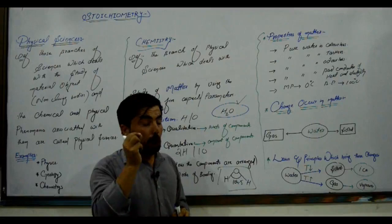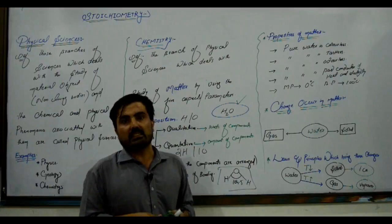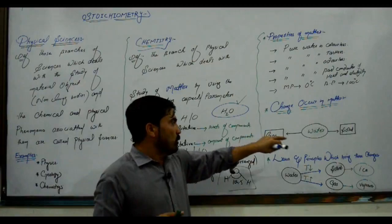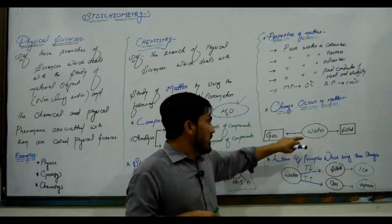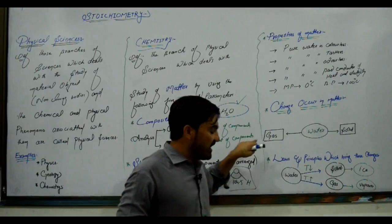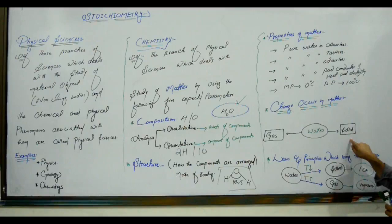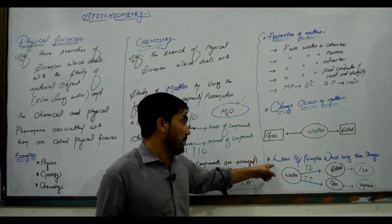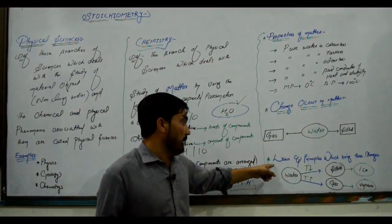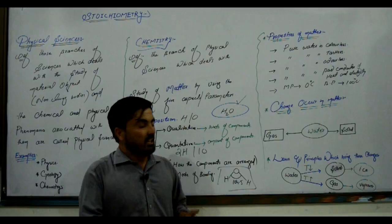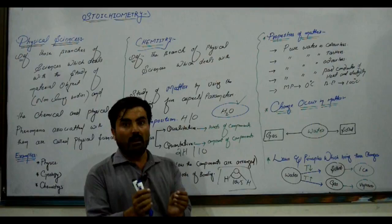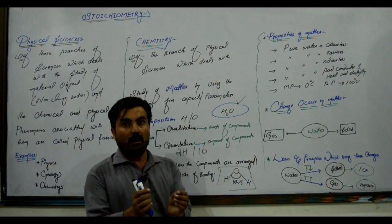The fourth aspect is changes that occur in matter. For the targeted matter, we study what kinds of changes occur in it. For example, water undergoes physical changes: it can change from liquid state to solid state (ice), and from liquid state to gaseous state (steam). These are the observable changes in water.